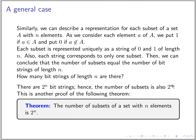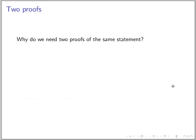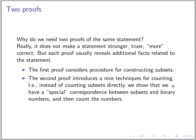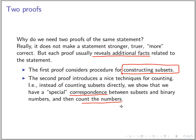You may ask: why do we need two proofs of the same statement? Having two proofs doesn't make the statement stronger or more correct — a correct statement is correct. But usually each proof reveals additional facts. The first proof showed a procedure for constructing subsets. The second proof introduced a nice technique: instead of counting subsets directly, we established a correspondence between subsets and binary numbers and then just counted the numbers. This procedure will be useful many times in the future.